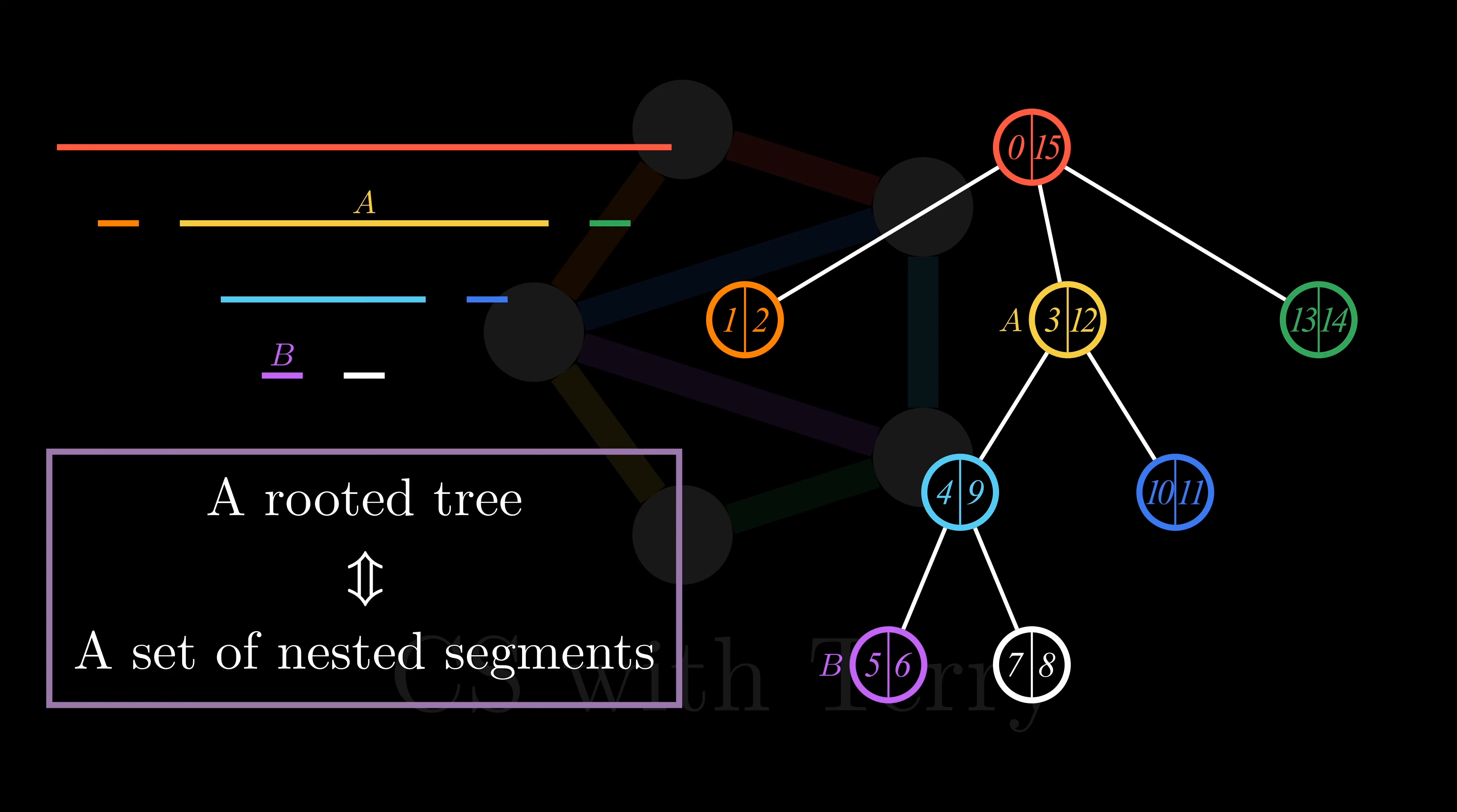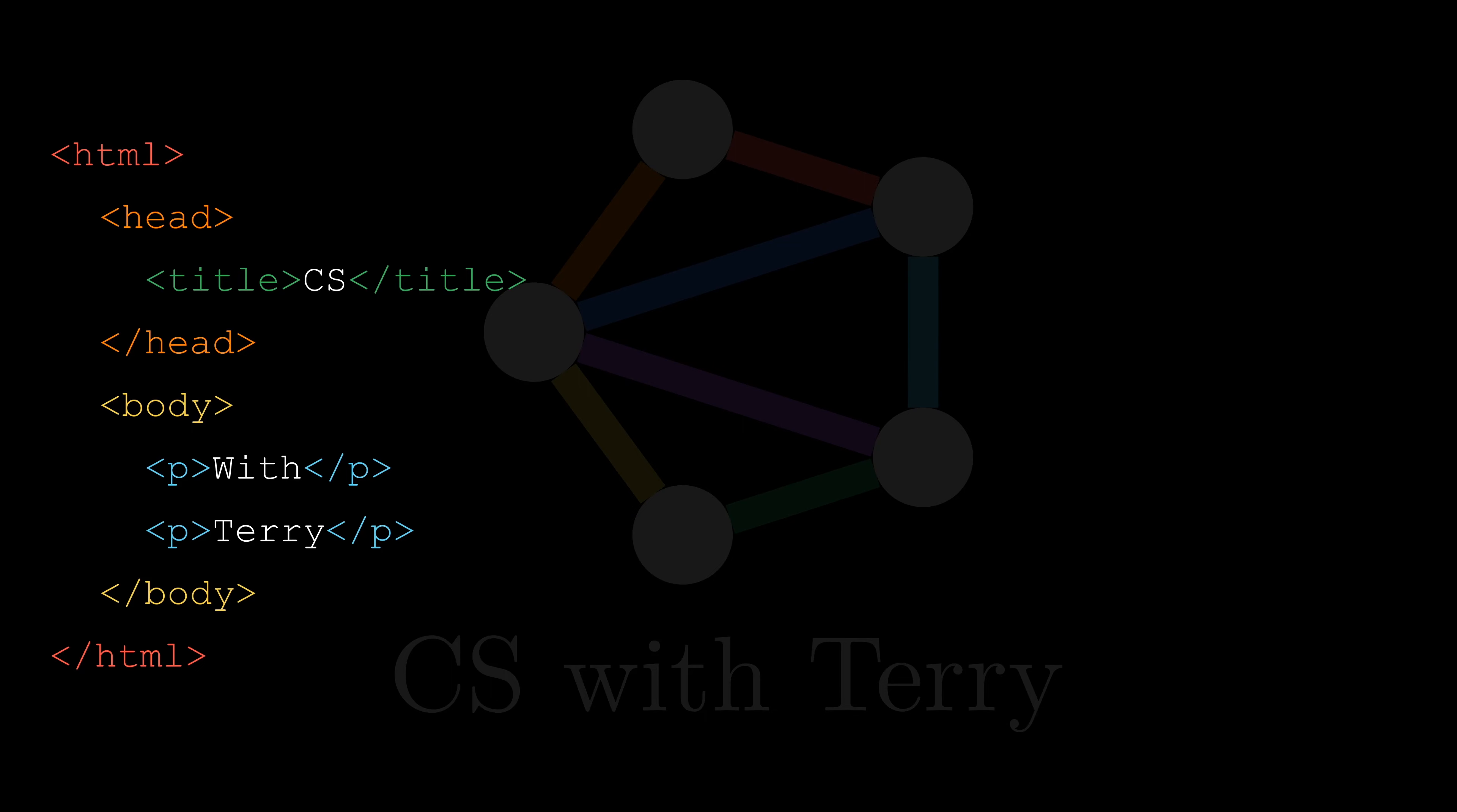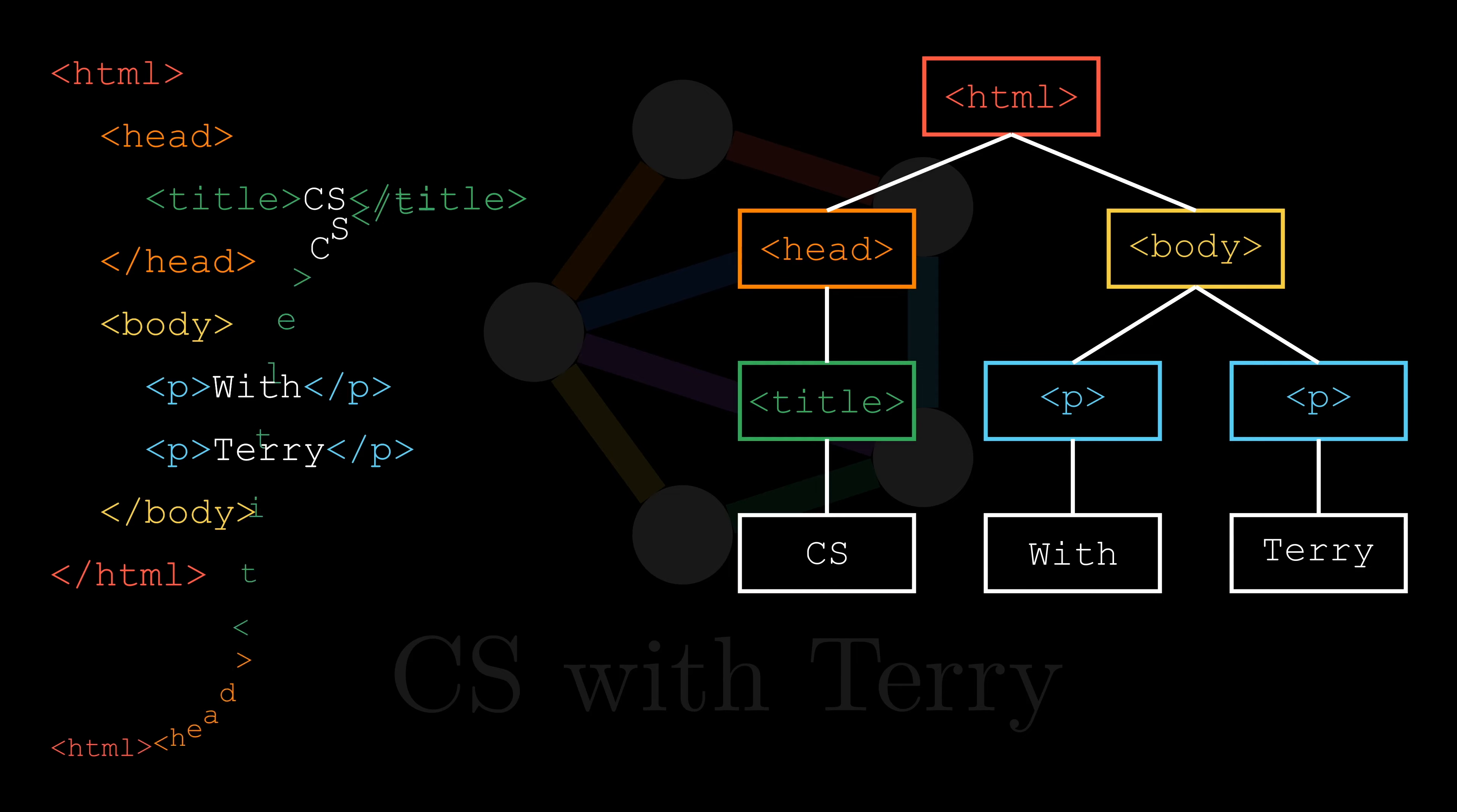Have you encountered the scenario of rooted tree being equivalent to nested line segments before? It is actually pretty common in programming. HTML, for example, is like that. As we all know, HTML is a tree-like structure, and we can use DOM tree to represent HTML. On the other hand, HTML is essentially a string. Let's flatten it.